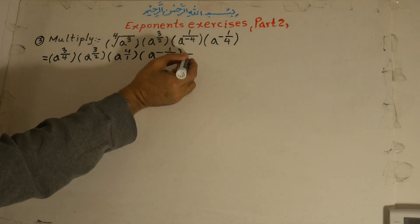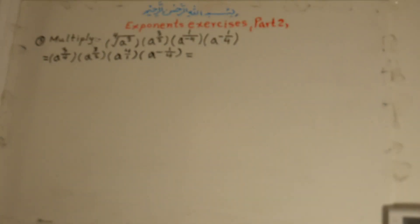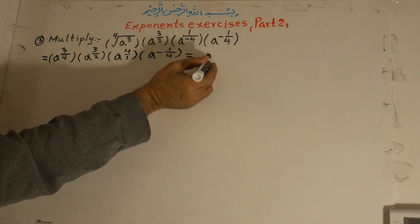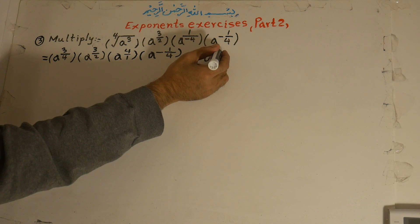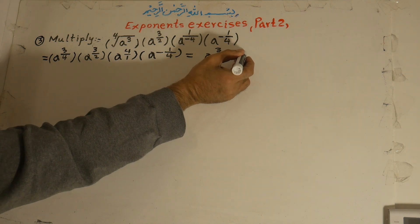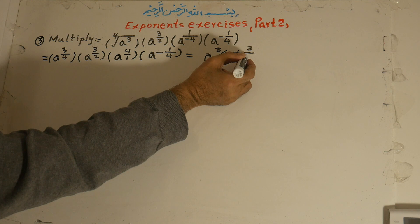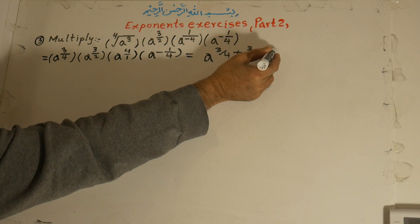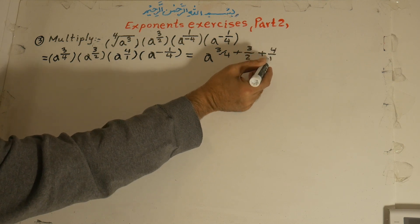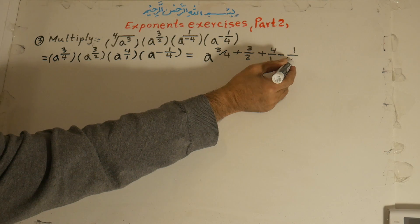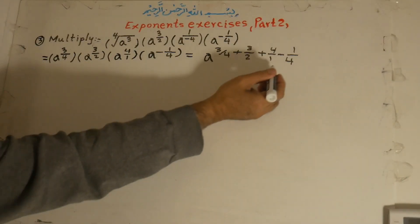Now what we do is multiply all of these. For multiplying terms with the same base, we write the same base and add the powers: 3 over 4 plus 3 over 2 plus 4 over 1 minus 1 over 4.